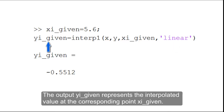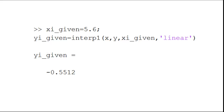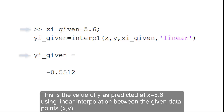The output yi_given represents the interpolated value at the corresponding point xi_given. This is the value of y as predicted at x equals 5.6 using linear interpolation between the given data points.